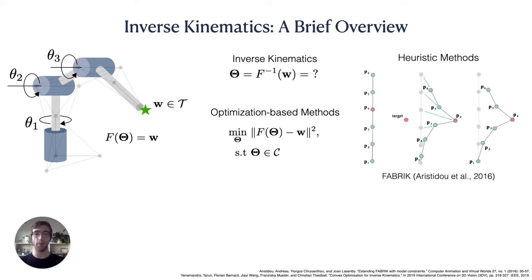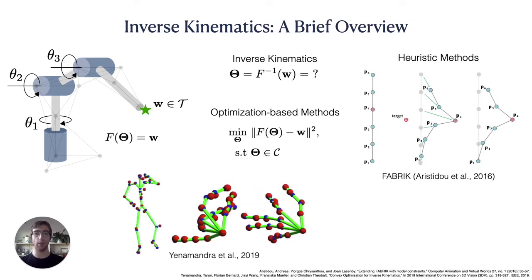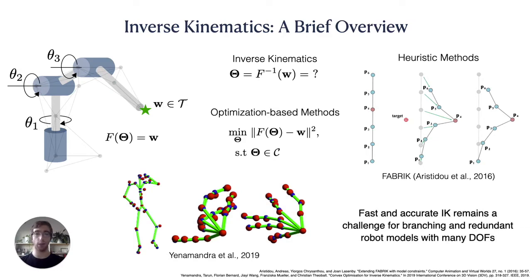Additionally, a variety of heuristic methods like FABRIK can be used. However, rapidly and reliably computing this essential step in the motion planning pipeline remains a challenge for robots with many redundant degrees of freedom and complex branching structures.